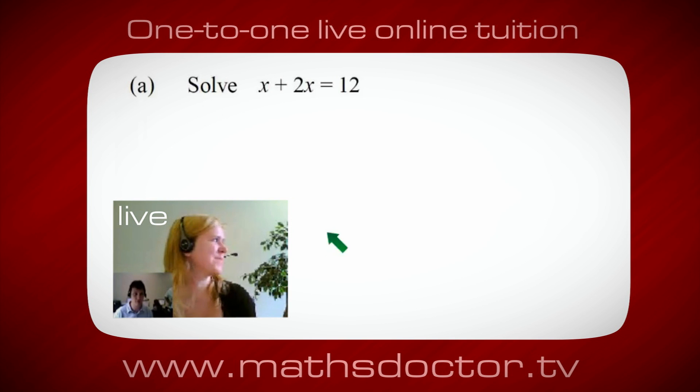OK, Marie, so let's have a look at this one. So solve x plus 2x equals 12. So what do you think you'd do first? OK, well, I want x on its own, so I would put x equals 12 minus 2x.